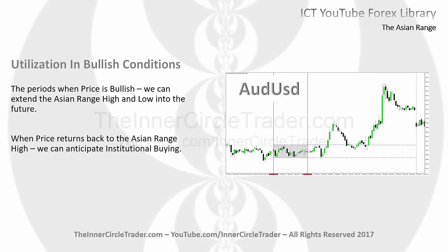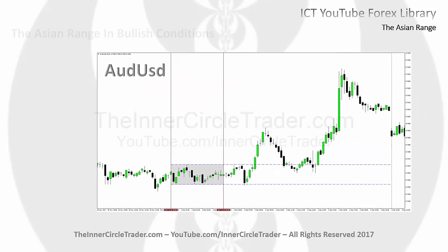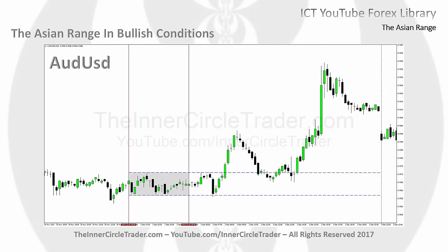When price is bullish, we can extend the Asian range high and low into the future. When price returns back to the Asian range high, we can anticipate institutional buying. We're going to assume we had an expectation that the Aussie dollar was bullish for this particular day. If you look at the daily chart, there was a reason to reach up to an equal high, and on the four-hour or one-hour chart you can see what this whole day was reaching for — buy stops above the equal high.